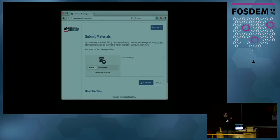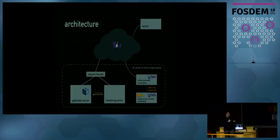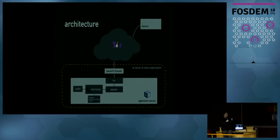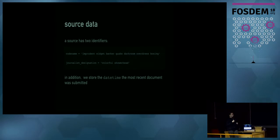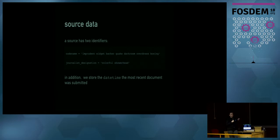On the architecture side, when a source submits information, zooming into the application server: the source's submission hits the server and gets encrypted by a simple Flask Python application. We store those encrypted submissions on disk and store a minimal amount of data about the source in a database. The data stored is the hashed and salted codename, and a journalist-facing designation — so journalists can refer to a source like 'Colorful Shah submitted something yesterday' — which is auto-generated. We also store the date and time of the most recent submission.